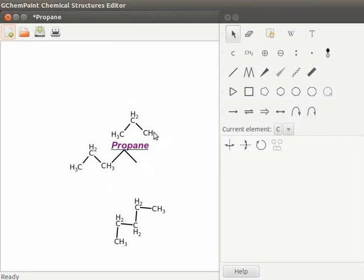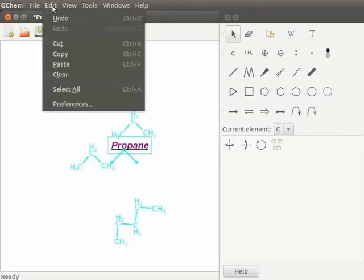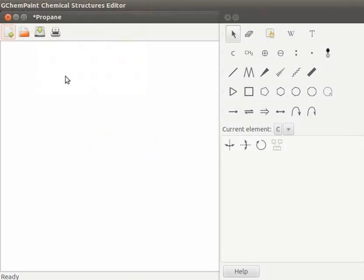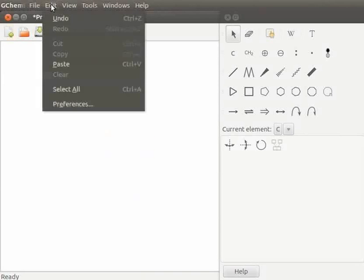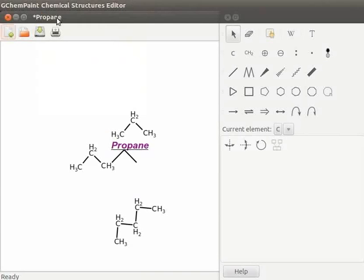To clear the display area, select all objects. Press Ctrl A to select all objects. Go to Edit menu and click on Clear. To get back our original structures, go to Edit menu, click on Undo, or press Ctrl Z.